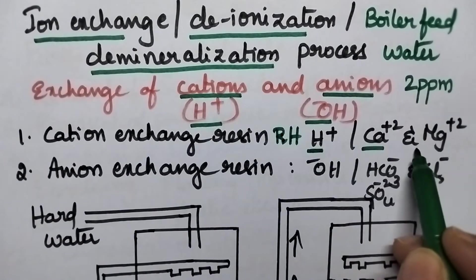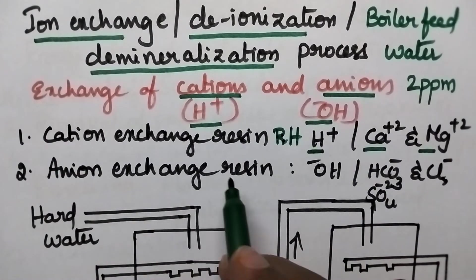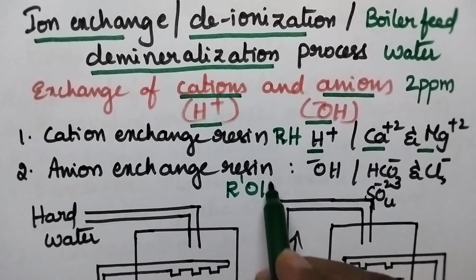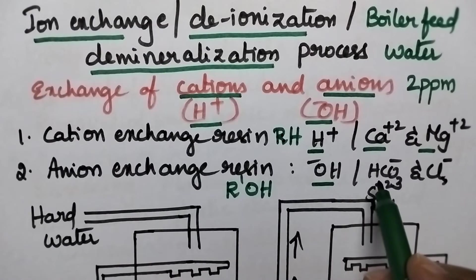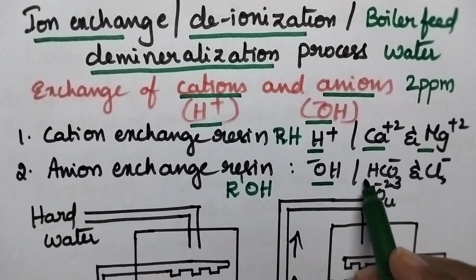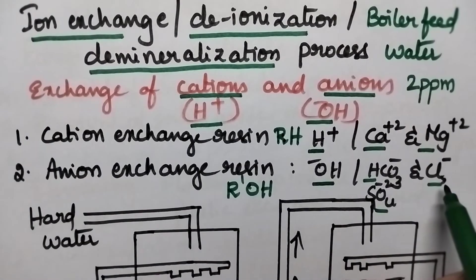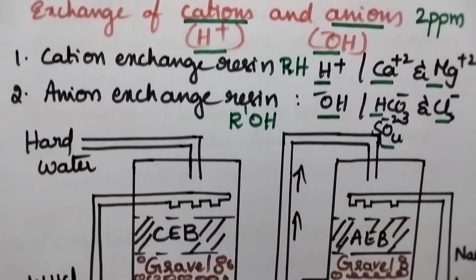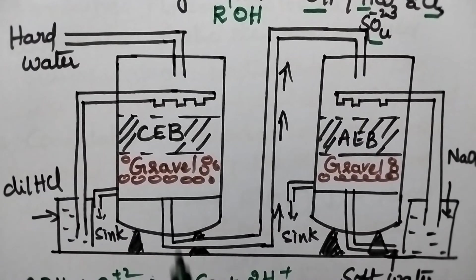Anion exchange resin can be represented as R'OH, where OH- ions can easily replace the hardness-producing anions such as bicarbonate, sulfate, and chloride. Coming to the ion exchange process, it generally involves the use of both a cation exchange bed and an anion exchange bed.